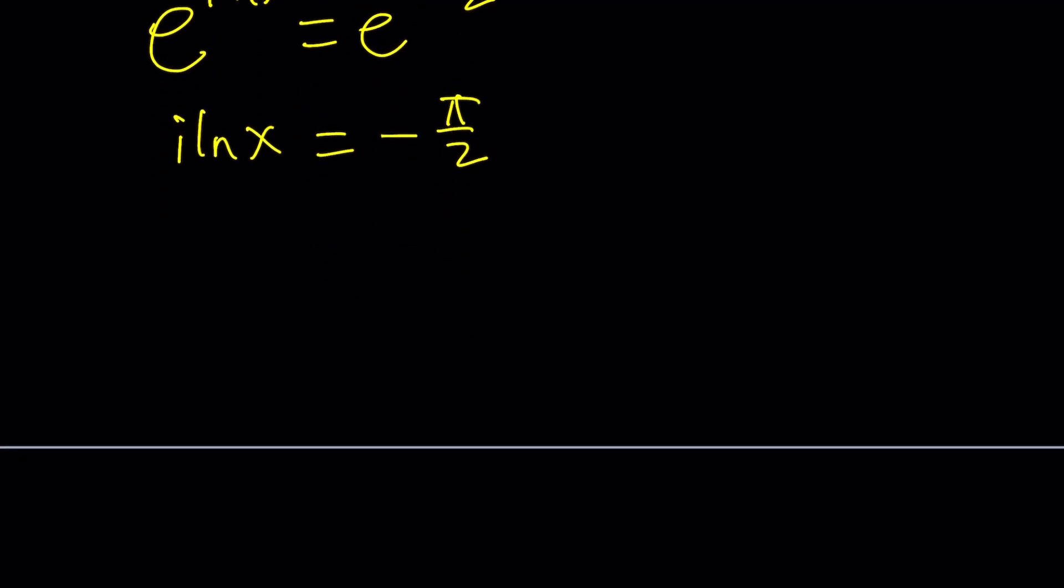Now, a lot of times people divide by i, but you can also multiply by i or even better, multiply by -i. Why? Because (-i)² = 1. i² = -1 and (-i)² = 1. So this is positive 1 and we end up with ln x = πi/2.